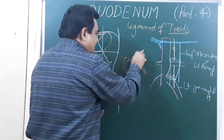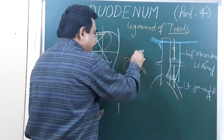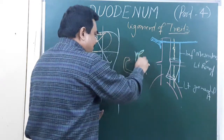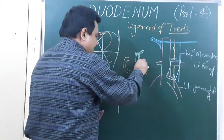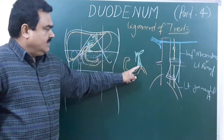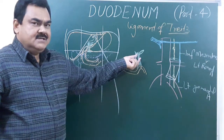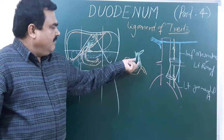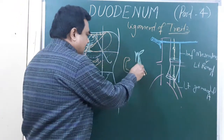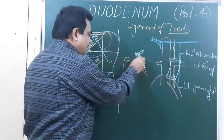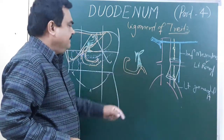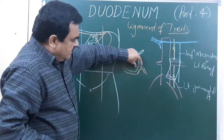This fibromuscular band originates from the esophageal opening and the right crus of the diaphragm. This is the Ligament of Treitz. Its upper one-third is striated muscle, the middle part is fibrous, and the lower part is smooth muscle — so it is divided into three parts.